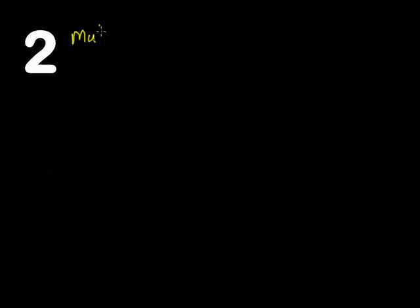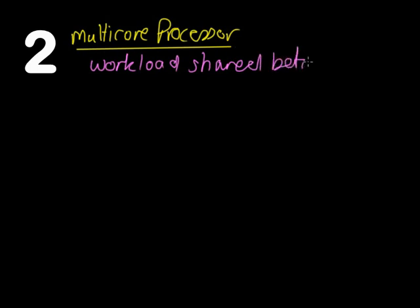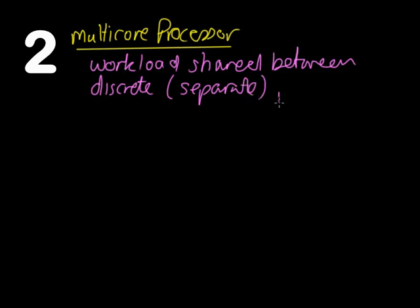The second thing I mentioned was to use, instead of a single core processor, a multi-core processor. When you use a multi-core processor, you can share the workload of processing. The workload is shared between discrete — or separate — processing cores. So instead of having a single processing core, you have two, four, eight, sixteen, however many you can fit.